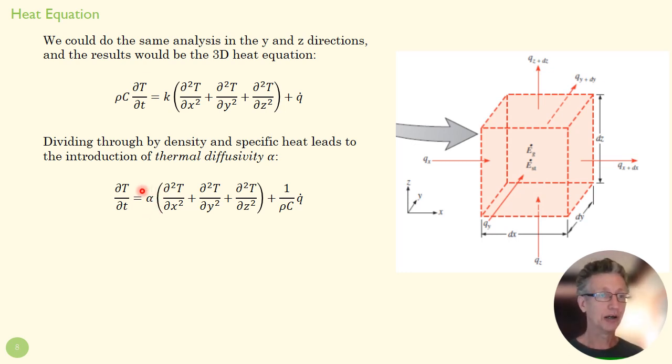And that alpha is equal to k over rho c. So this tells us how fast thermal energy can move through a material, right?